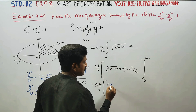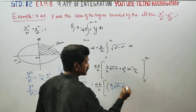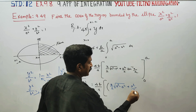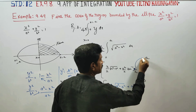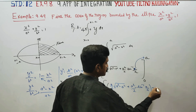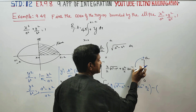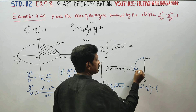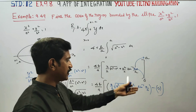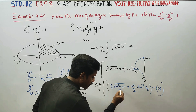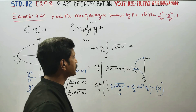Substituting the upper limit x = a: the term x√(a² − x²) becomes a√(a² − a²) = a × 0 = 0. Substituting the lower limit x = 0: anything multiplied by 0 is 0, and sin⁻¹(0) = 0. So the lower limit contribution is 0.